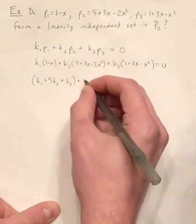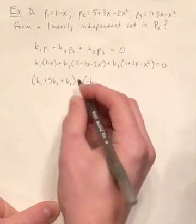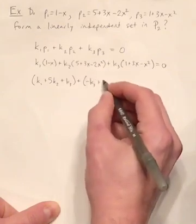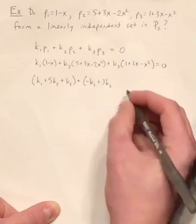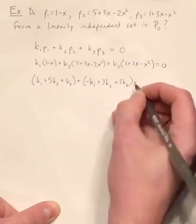Now let's do the same thing for the X's. So I'm going to have negative K1 plus 3K2 plus 3K3. That's the coefficient for X.